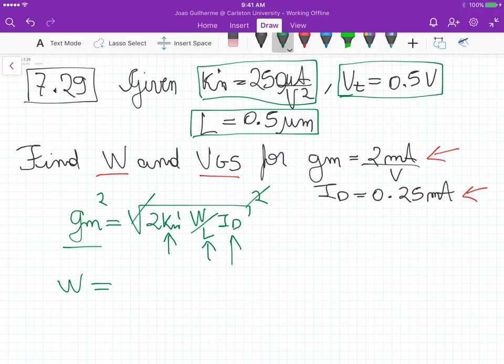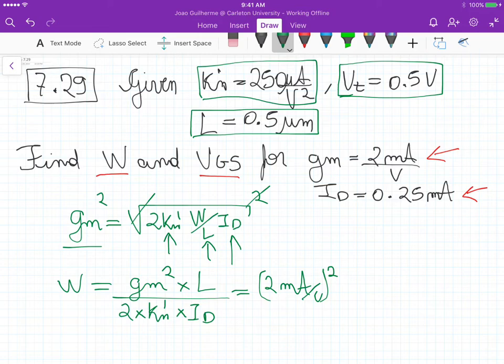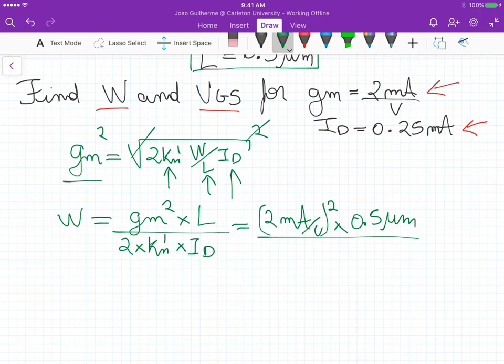So W becomes gm squared times L divided by 2 times the process transconductance times the current ID. And this is equals to 2 milliamps per volt squared times the length which is 0.5 micrometers divided by 2 times the